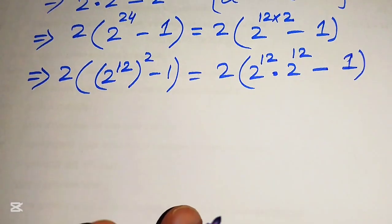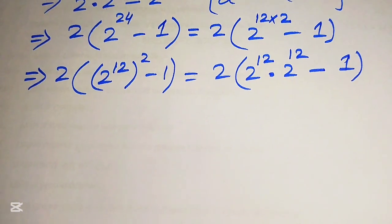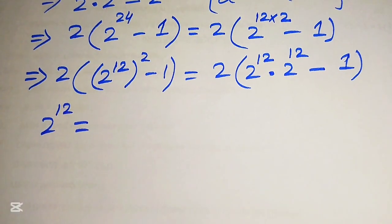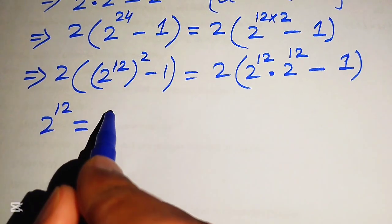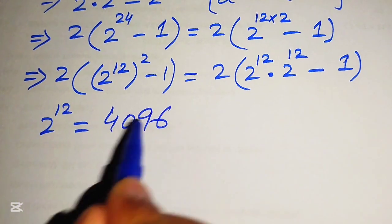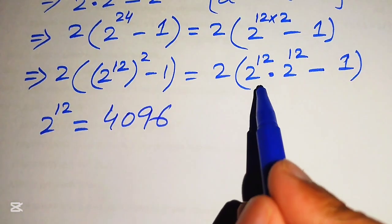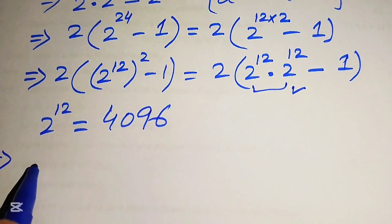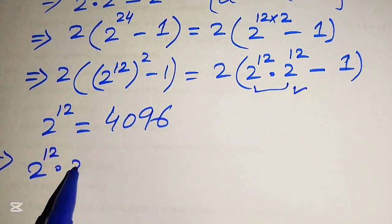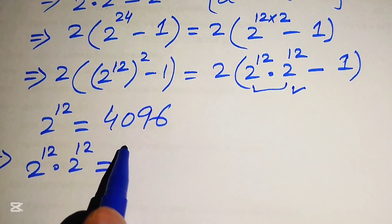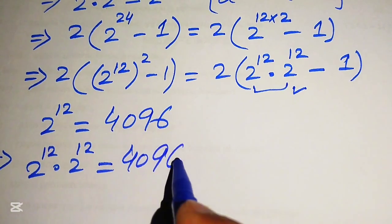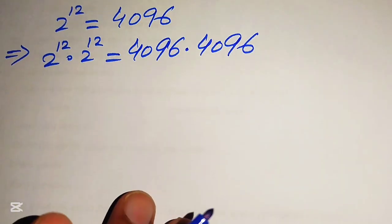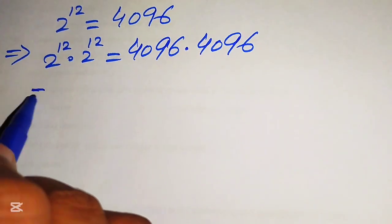Now we need to find the value of 2 to the power of 12 without using a calculator. The value of 2 to the power of 12 is 4096. To move further, we need to find the product of 2 to the power of 12 with 2 to the power of 12, so we write this as 4096 multiplied by 4096.